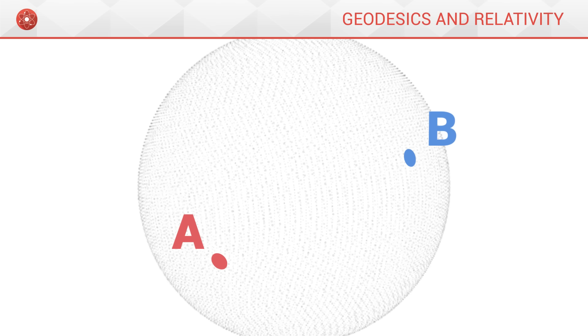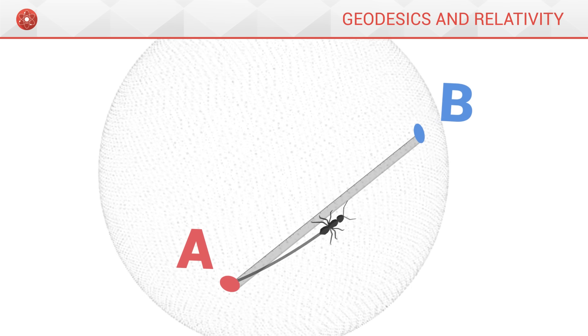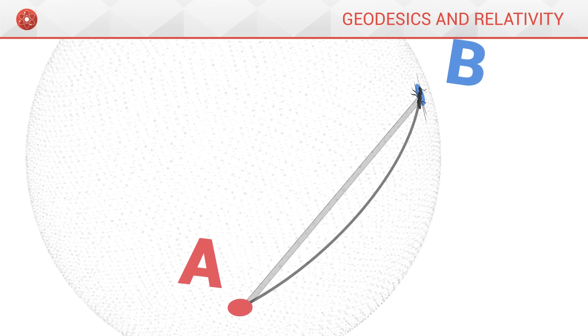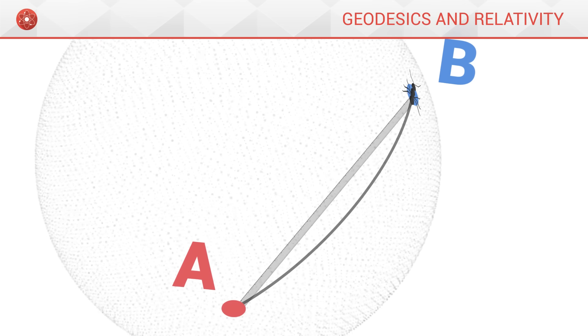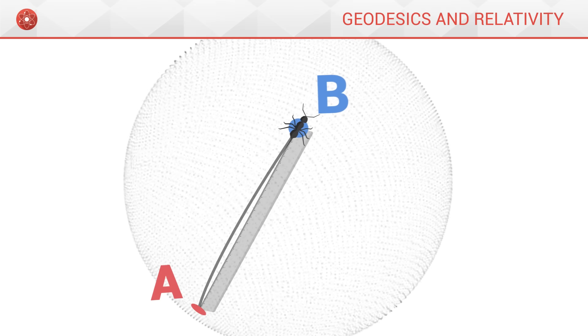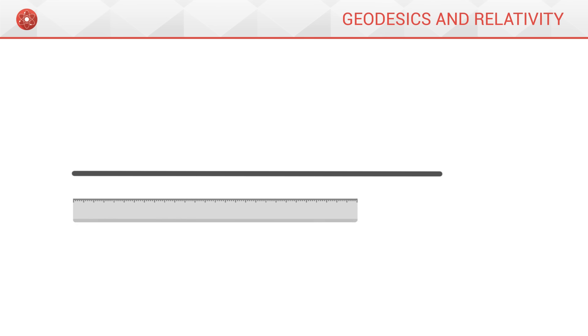At first sight, we could take the ruler again and place it between points A and B to measure how many centimeters separate them. But if we ask the ant to walk from A to B, since it remains on the surface of the sphere, it will follow a different path from the straight line measured by the ruler. The ant must walk a greater distance because the sphere is curved. It has to cover a whole arc. It does not measure the same distance as the ruler.